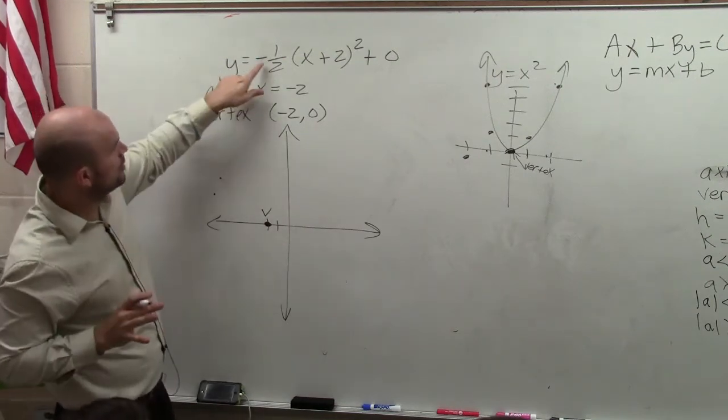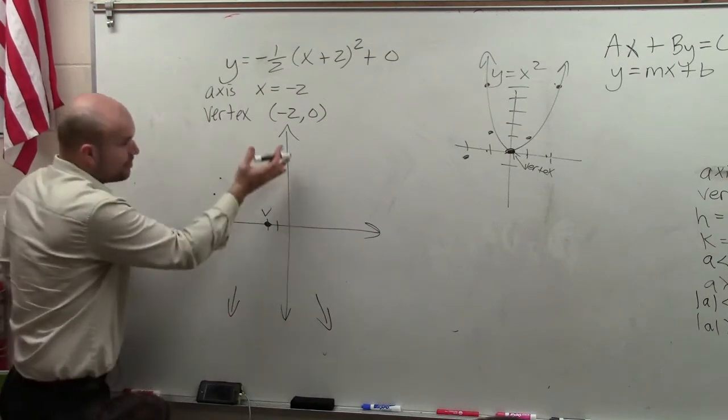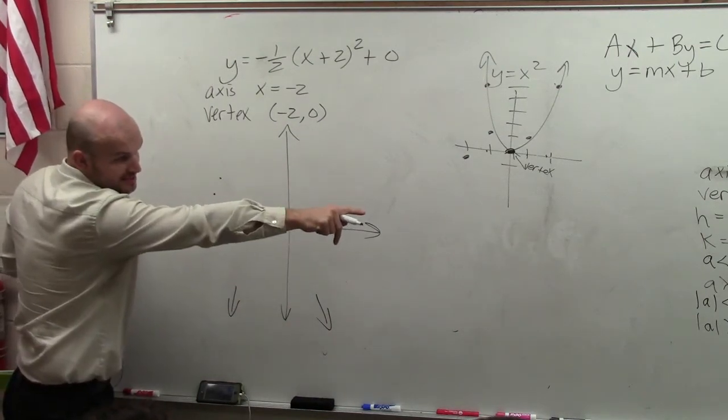Now the other important thing is I know that a is negative. So I know my graph opens down. It's not going to open up. It's going to open down because of that rule, when a is less than 0.